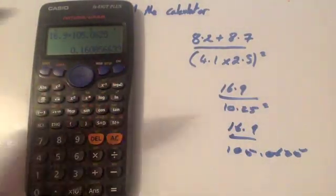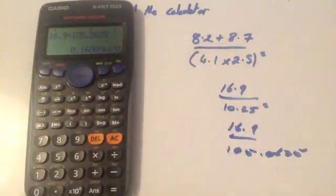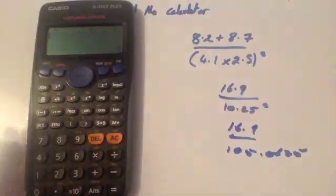Okay, so that's one way you could do it. You could do the top line, do the bottom line, and then finally divide the top line by the bottom line. Now, if you want to do it in one go in your calculator, you've just got to make sure you're using the brackets in the right places.